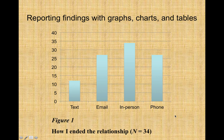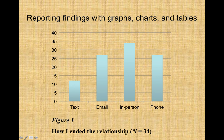APA is very picky and specific, and I did put handouts on DTOL for you to use when creating tables and figures so that you do them right. With the chart, we don't have the box that Word or PowerPoint would automatically add — we get rid of that. We also get rid of the title that is automatically added, and then we put the Figure 1 heading below the actual chart, the title, how I ended the relationship, and then in parentheses the sample size. The N is italicized, as is Figure 1, and within the parentheses there's a space before and after the equal sign.